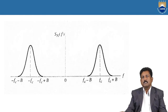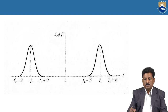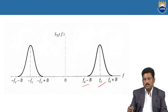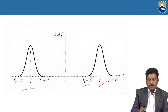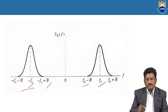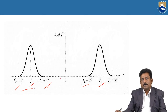This is the spectrum. You can see both the positive and negative sides. On the positive side, the carrier frequency fc gives: fc plus fm is the upper sideband, and fc minus fm is the lower sideband. Coming to the negative side, minus fc plus fm is the upper sideband.